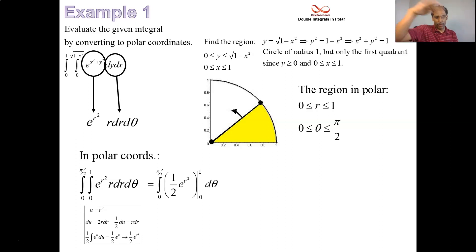We have to evaluate it from 0 to 1. Put a 1 in, we get half of e. Put a 0 in, we get a half. We can leave the half out. And then we have this theta integral. That's a constant. We could pull that out. And then, that's theta at pi over 2 and at 0. It's just pi over 2 times this constant, half of e minus 1.